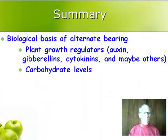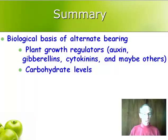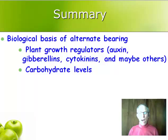In summary, research indicates both plant growth regulators — such as auxins, gibberellins, cytokinins, and maybe others produced by the seed — are involved in alternate bearing. In addition, carbohydrate levels also influence alternate bearing.